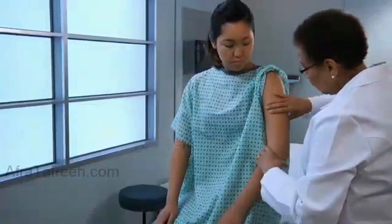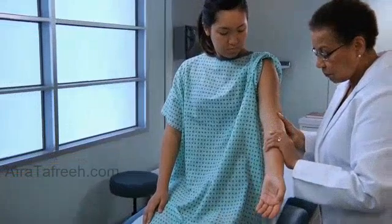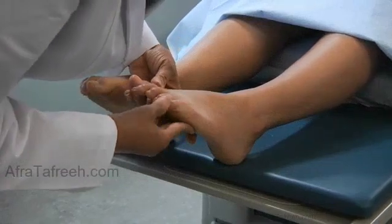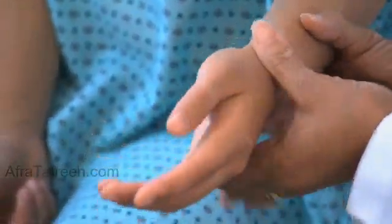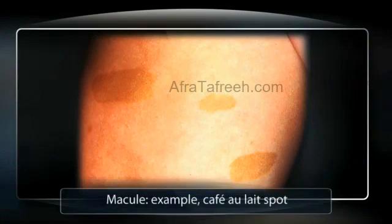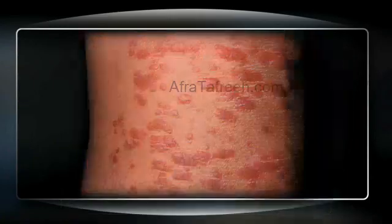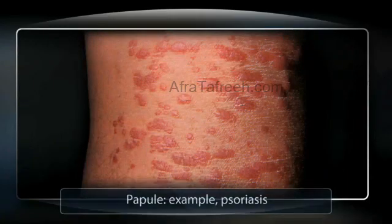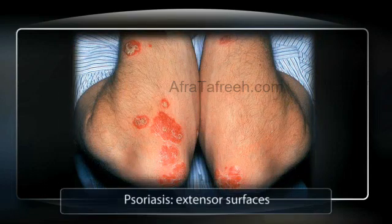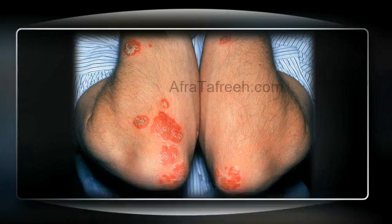Observe any lesions of the skin, noting their important characteristics. Note the anatomic location and distribution of any lesions over the body. Do they involve exposed surfaces, the intertriginous or skin fold areas, extensor or flexor areas, or acral areas such as the hands and feet? Do they involve any areas exposed to specific allergens or irritants, such as wrist bands or rings? Describe the type of lesion: is it a macule or flat on the skin surface like a cafe au lait spot, raised or a papule seen in psoriasis, a vesicle that is palpable and fluid-filled, or a nevus or pigmented lesion? Find and inspect representative and recent lesions that have not been traumatized.